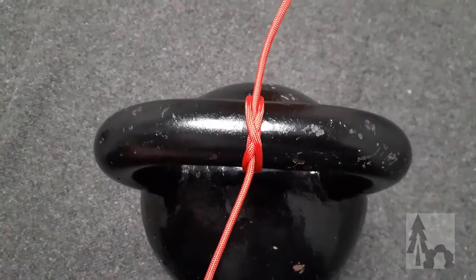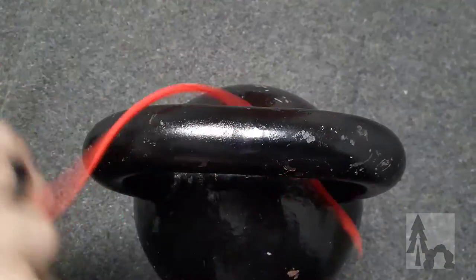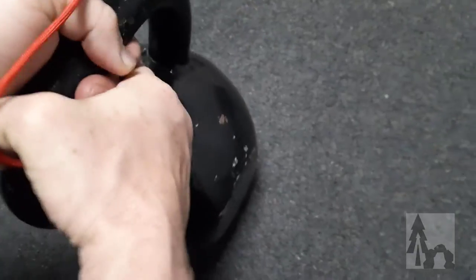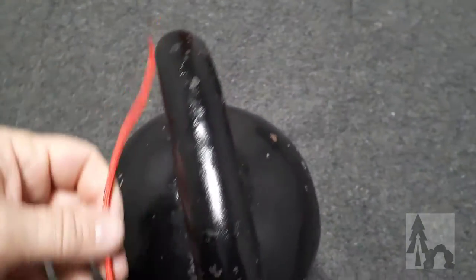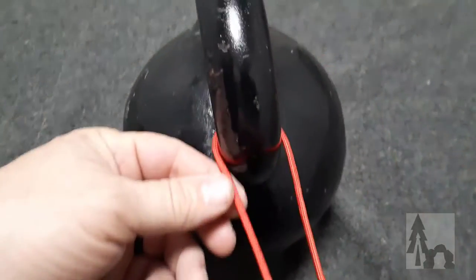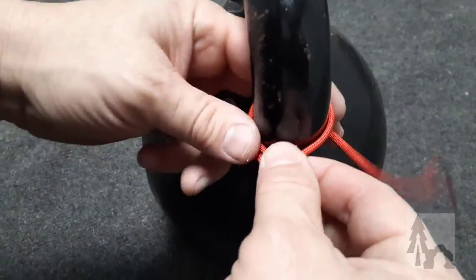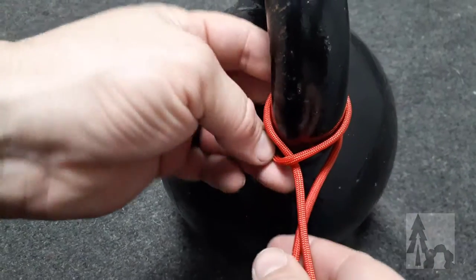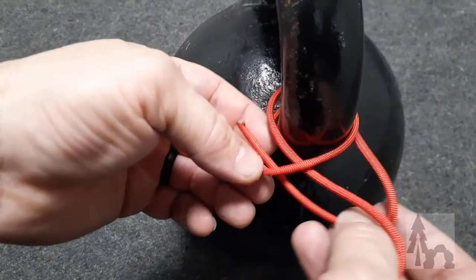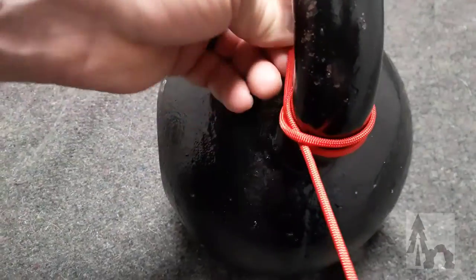Okay, so the clove hitch, very simple. I'm going to do a vertical one, see if we can see that. I'll go around my structure, I cross my standing line, I go around again, and this time when I come back around I go under the cross line. And then there's my vertical clove hitch.